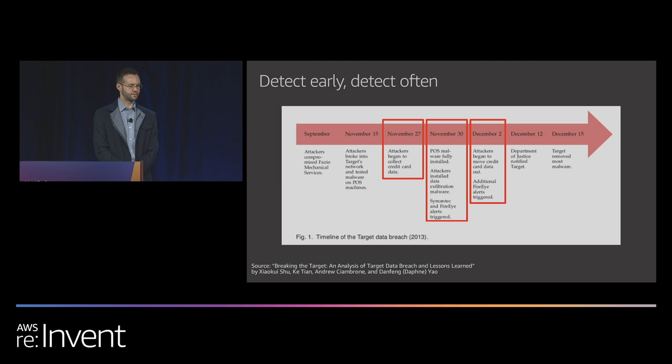That three-day window — November 30th to December 2nd — the credit cards hadn't left. The security team, if they had paid attention to the alerts they were getting, could have done something. They could have prevented the breach. The estimates for the impact are around $250 million. The point is that it's really important to get good at spotting these things quickly and then doing something about it effectively.